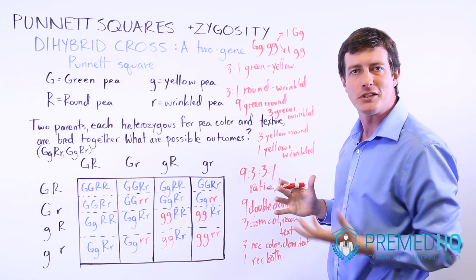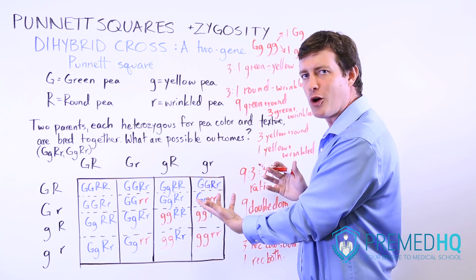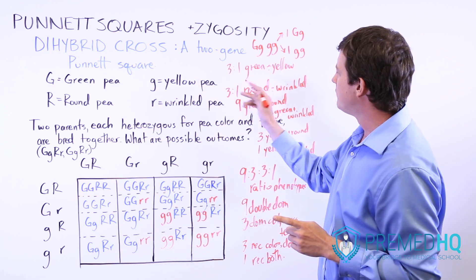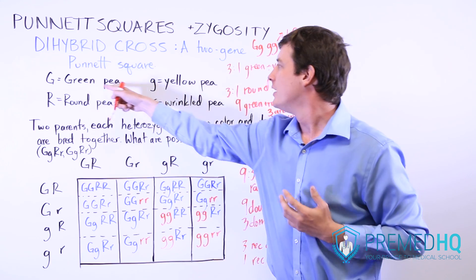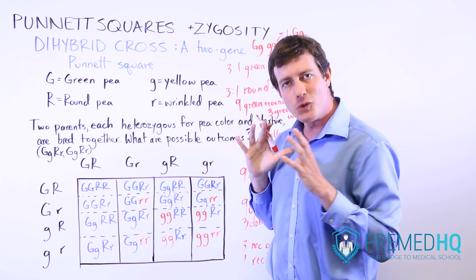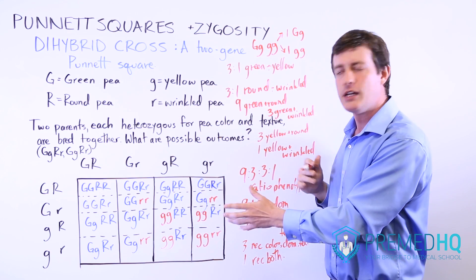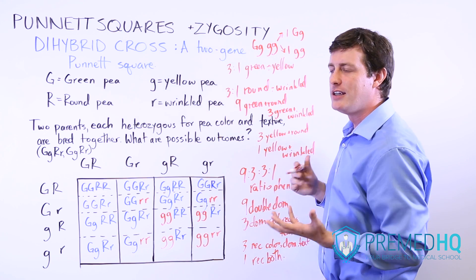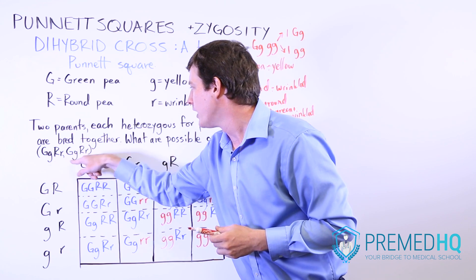We'll have a separate video discussing probabilities with Punnett squares so you can handle all the different dihybrid crosses that can show up — homozygotes bred with homozygotes, homozygotes bred with heterozygotes, and all the different traits. But recognize that by looking at the mathematical relationships for one trait at a time — for example, a three-to-one likelihood of green versus yellow and a three-to-one likelihood of round versus wrinkled — you can multiply those odds together to figure out the overall distribution. The most important thing is to grasp the 9-3-3-1 ratio, and then apply it in different situations where parents don't neatly fit the heterozygous-for-all-traits motif.